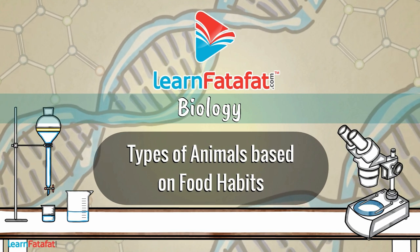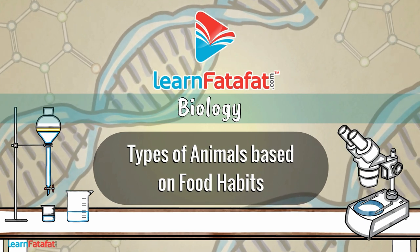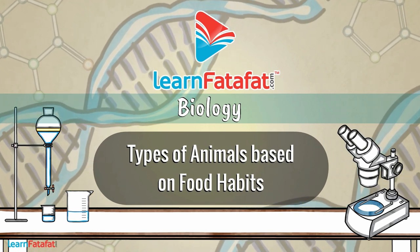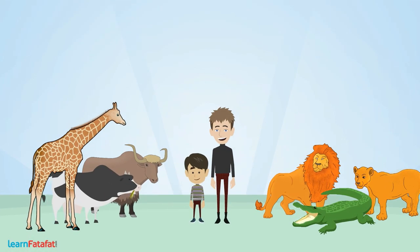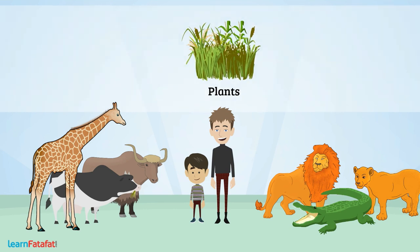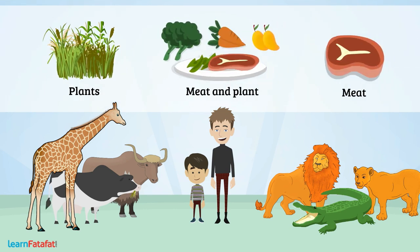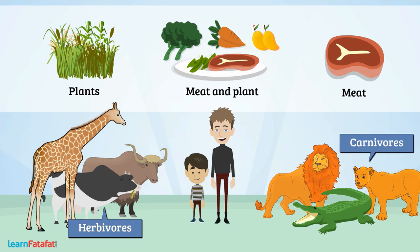Types of animals based on food habits. All living organisms need food. Do all of them eat plants? No. Based on their food habits, we can classify them into different categories like Herbivores, Carnivores, and Omnivores.